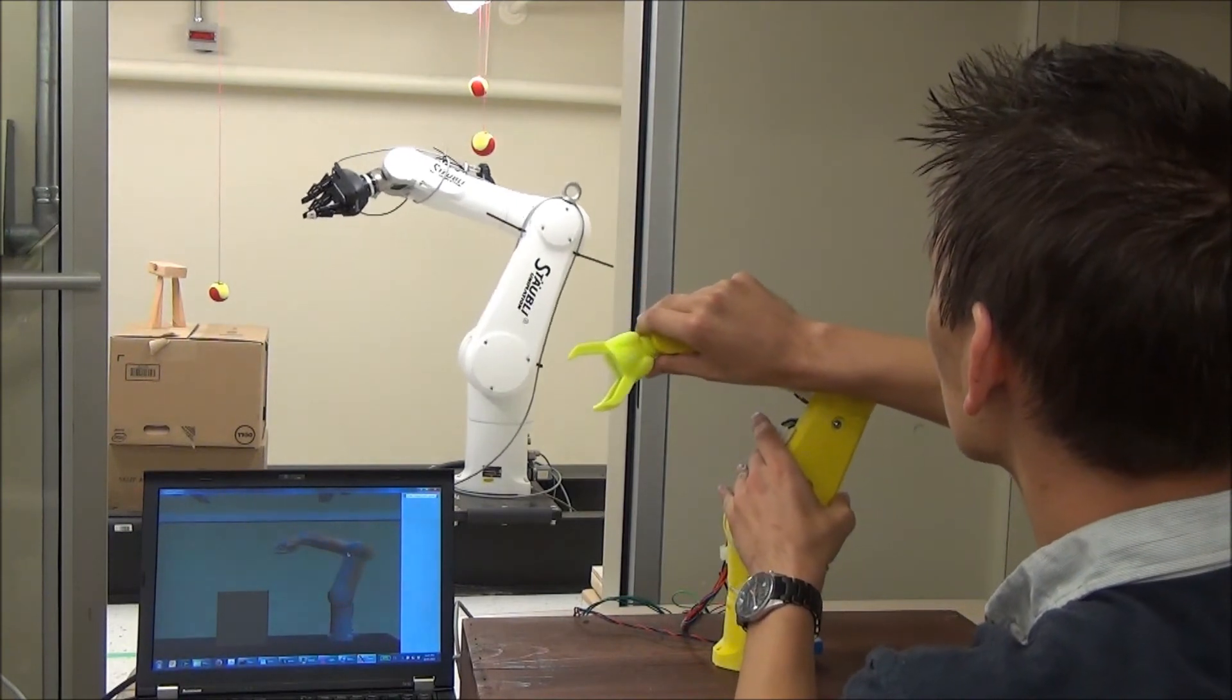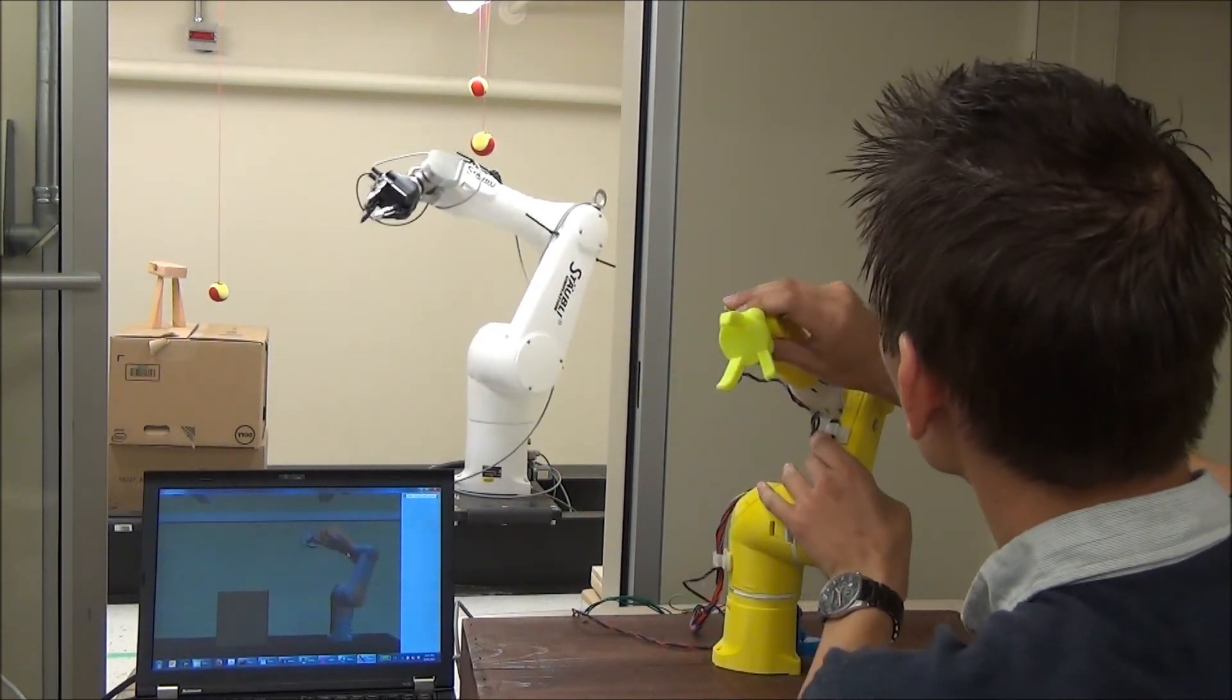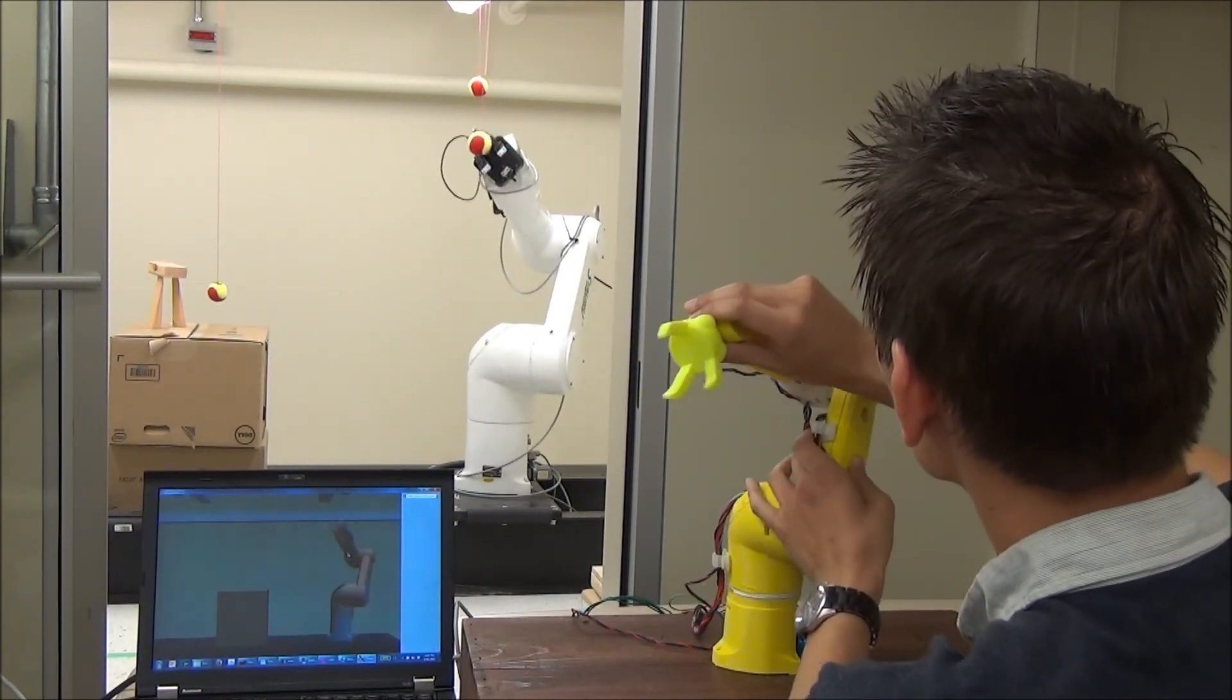The prototype demonstrated in this video is a 30% scale controller for the Staublee TX90L robotic arm.